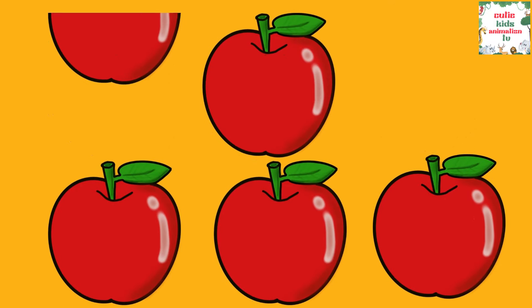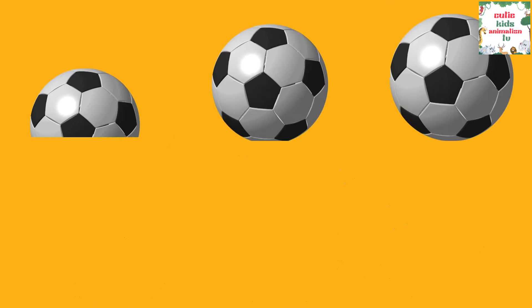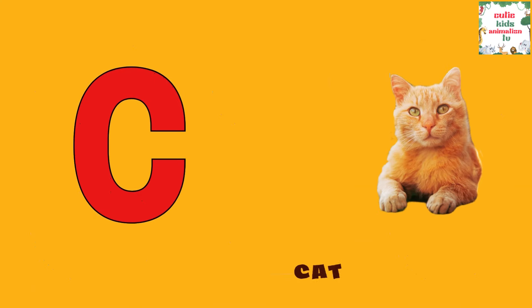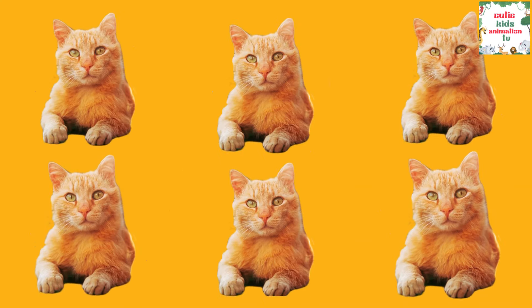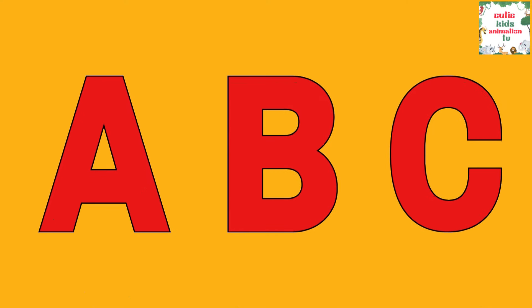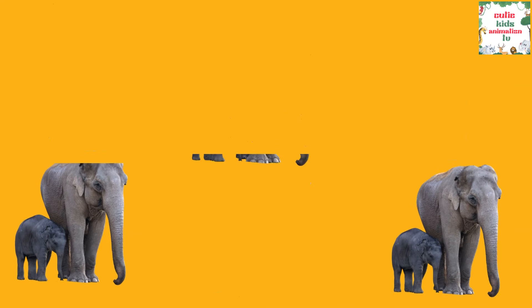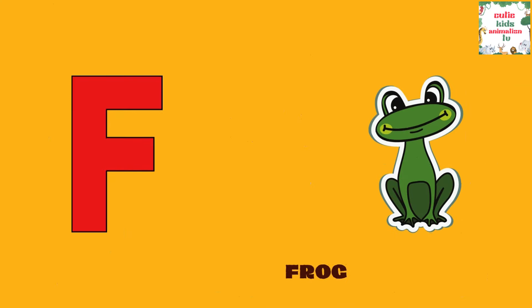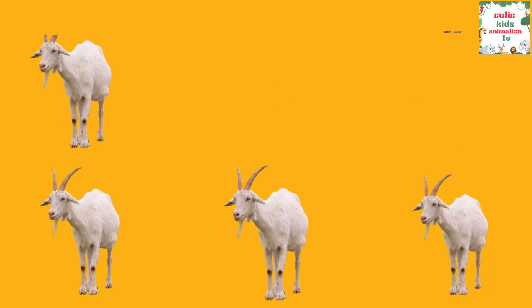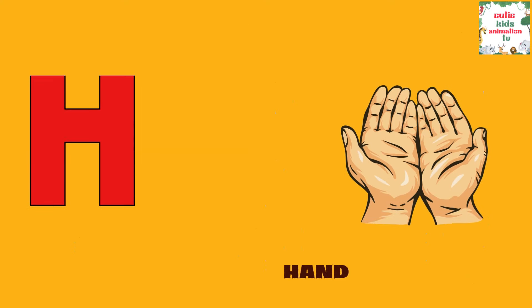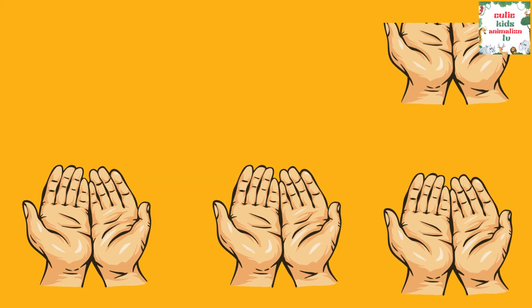A is for Apple, A-A-Apple. B is for Ball, B-B-Ball. C is for Cat, C-C-Cat. D is for Doll, D-D-Doll. E is for Elephant, E-E-Elephant. F is for Frog, F-F-Frog. G is for Goat, G-G-Goat. H is for Hand, H-H-Hand.